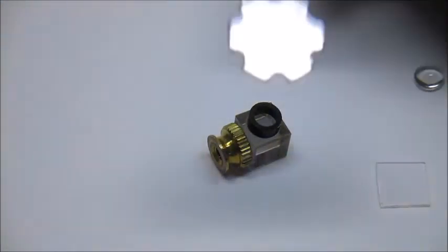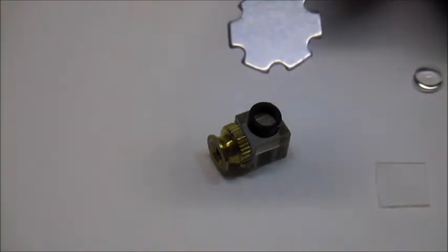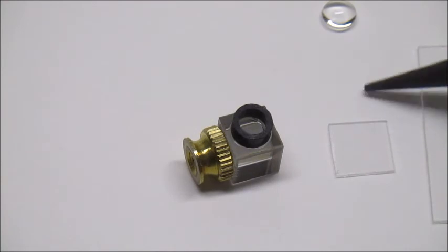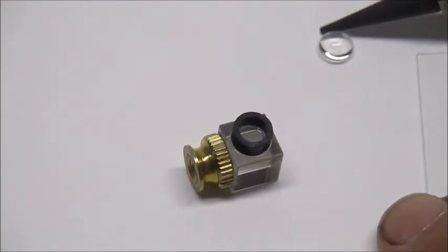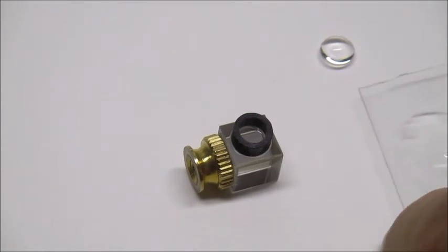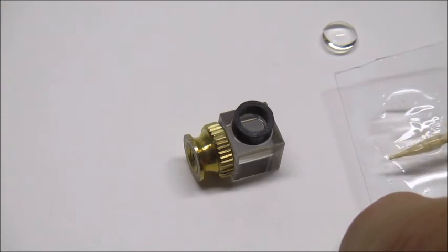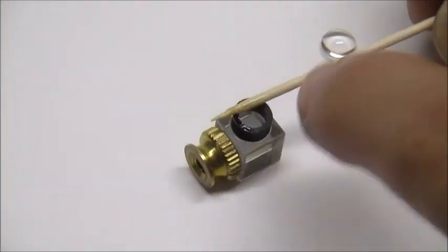Once I have the spacer put on, I'm going to glue on my cleaned lens. I'm going to take my toothpick and just kind of roll it in the glue and then roll it across the top of my spacer.